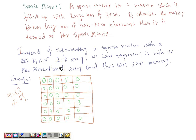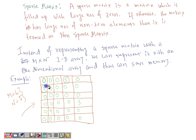A sparse matrix is a matrix that is filled up with a large number of zeros. If the matrix has a large number of non-zero elements, then we say that it's a non-sparse matrix. Consider this example: in this 6×5 matrix, only 4 elements are non-zero and all the other elements are zero. Such a matrix is called a sparse matrix.